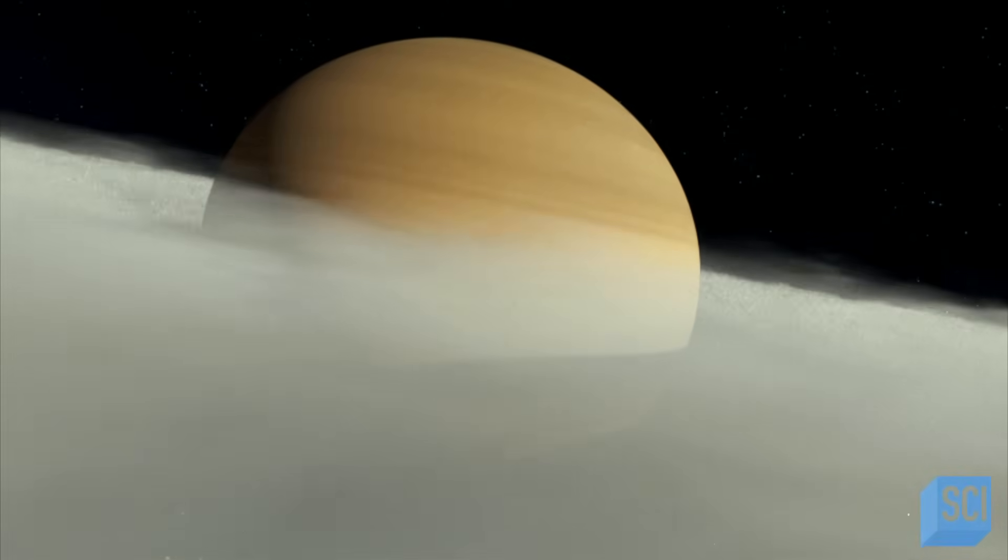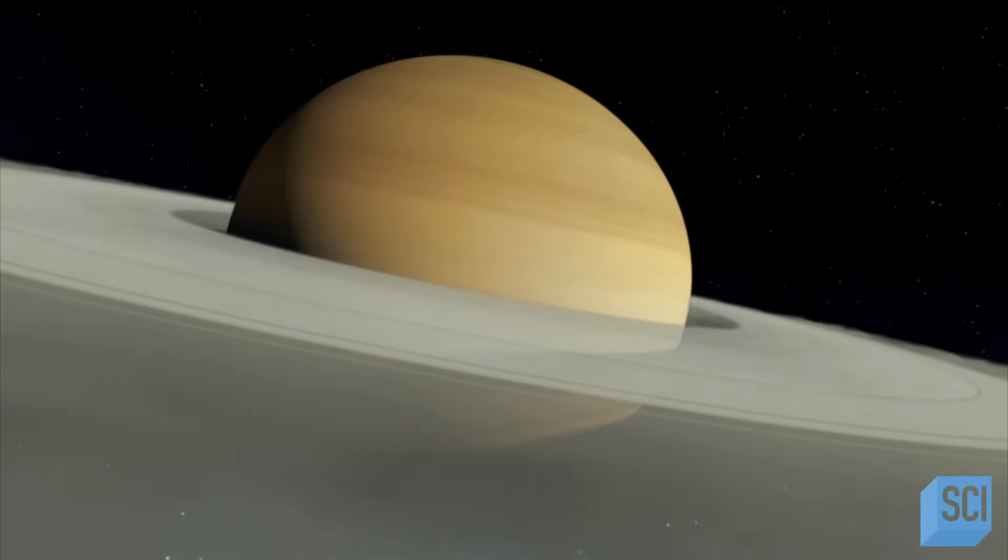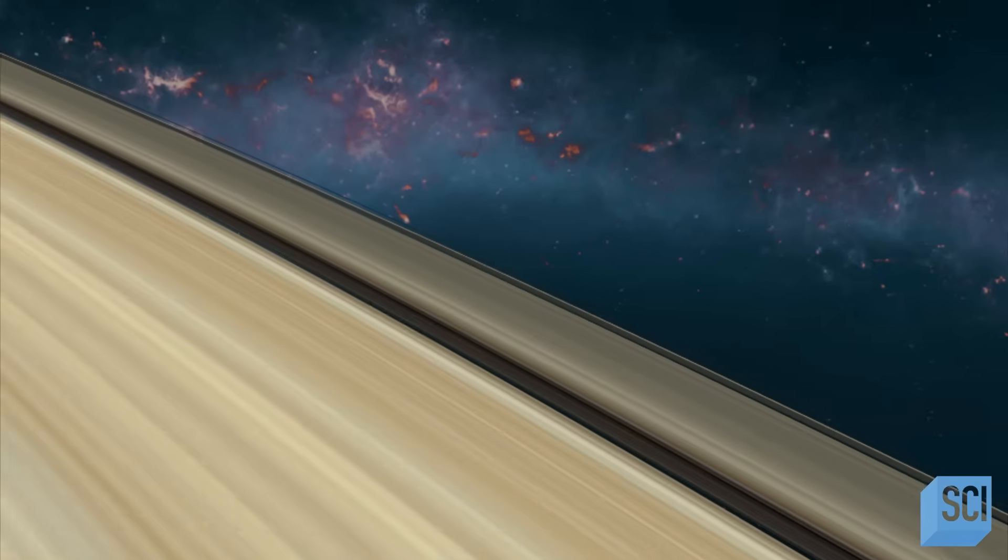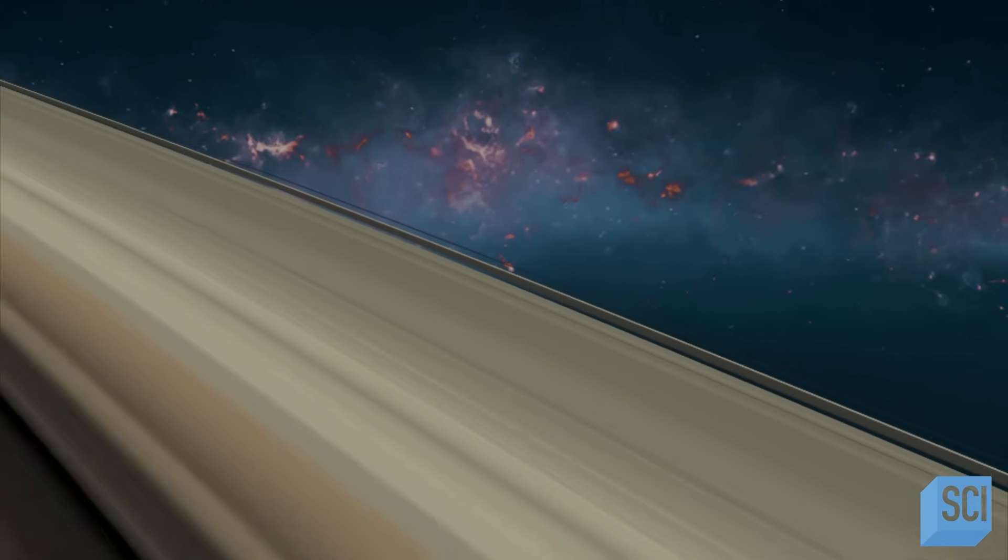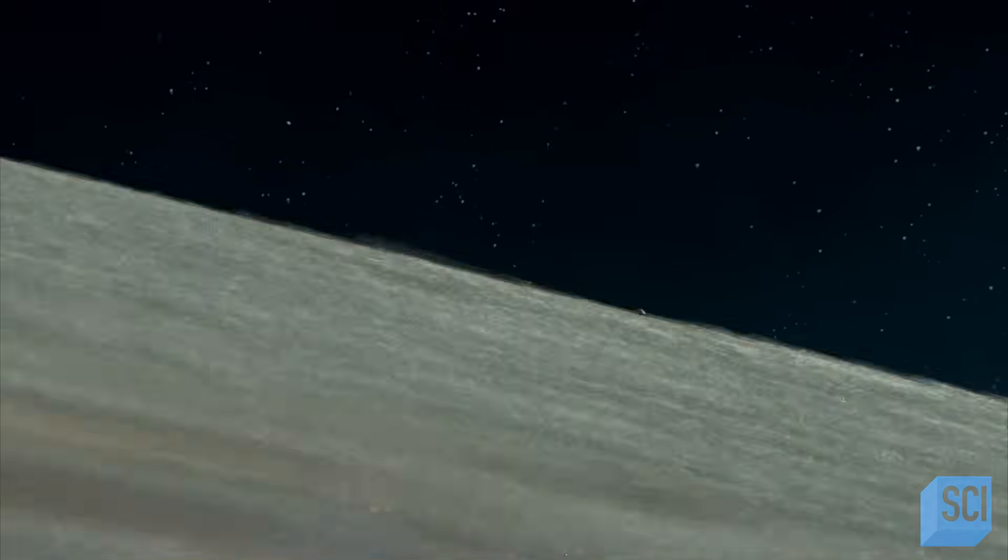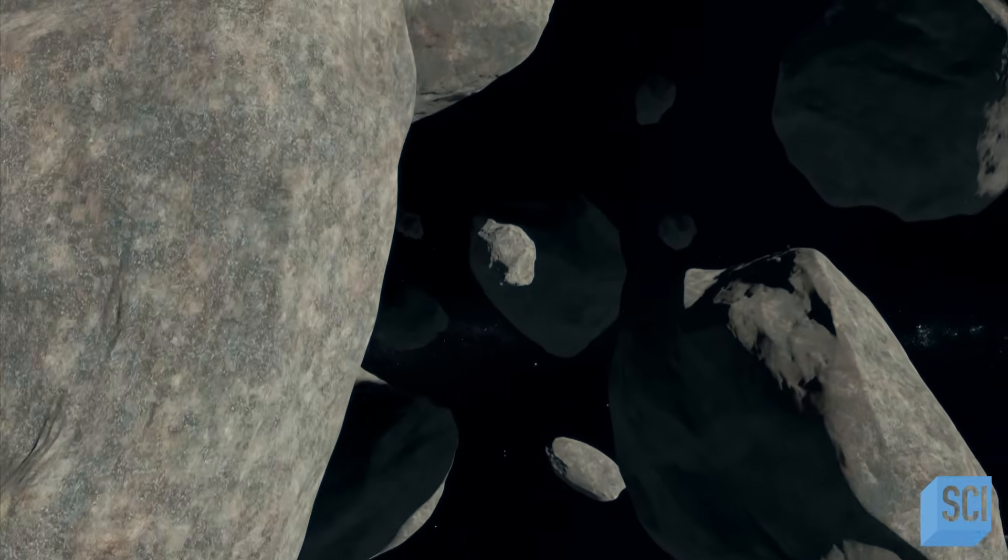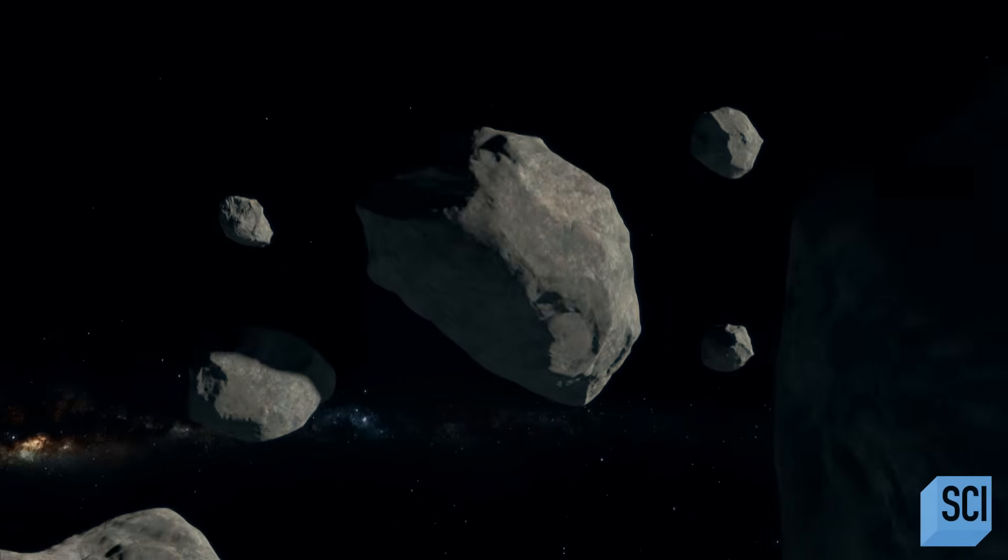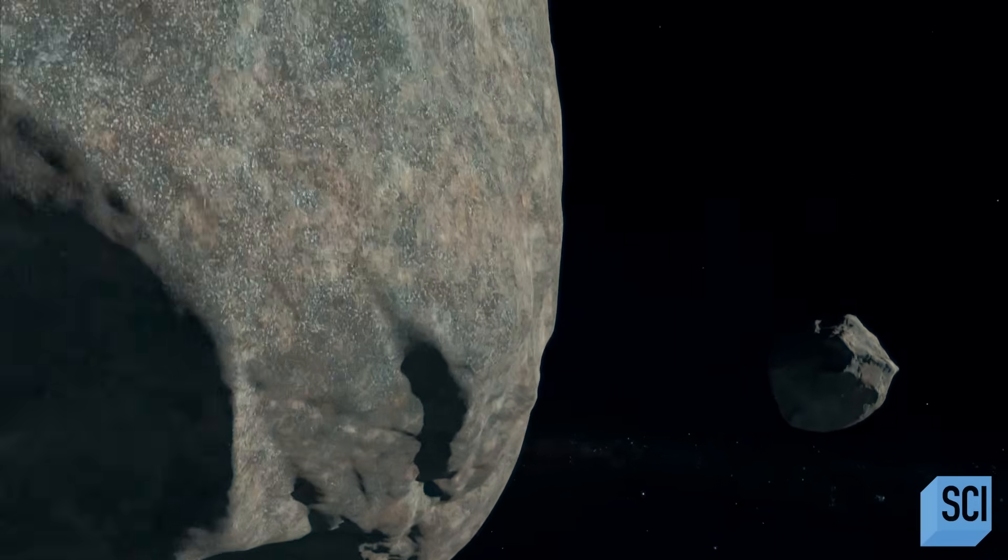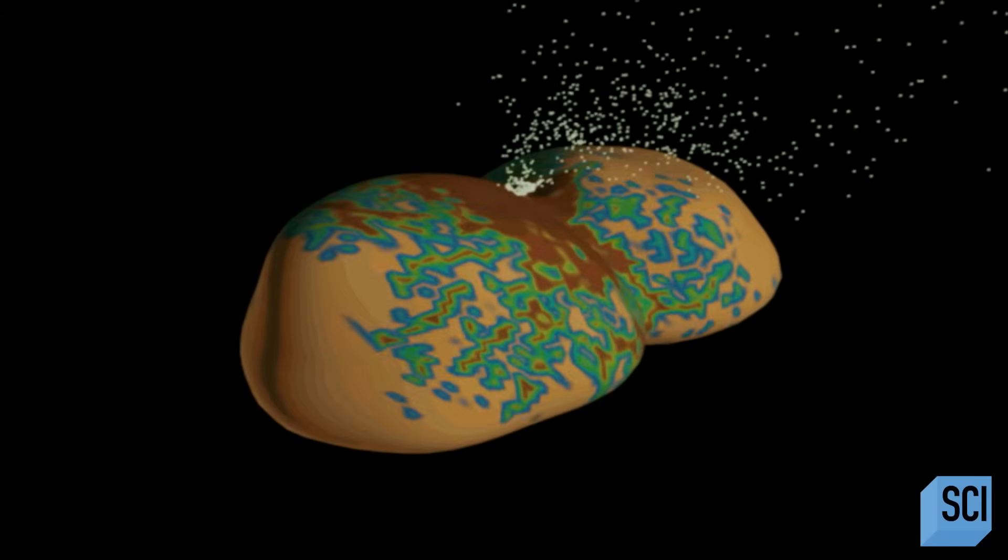But if the rings are so young, how did they form? They're made of billions of tiny particles, like shrapnel from some violent event. But what violent event, and why and when did it happen? At the University of Arizona, physicist Eric Asfog uses computer simulations to investigate what this event was.